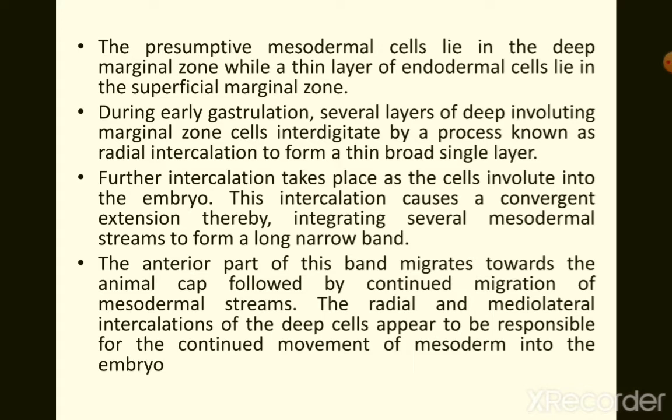This intercalation takes place as cells involute into the embryo. It causes convergent extension, integrating several mesodermal streams to form a single long narrow band. The anterior part of this band migrates towards the animal pole, followed by continued migration of the mesodermal streams.